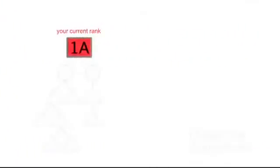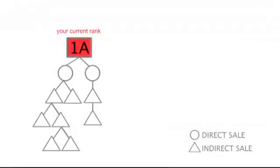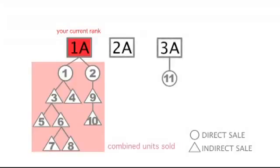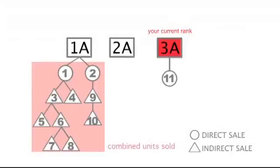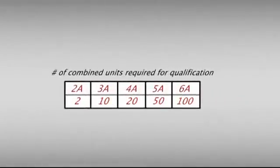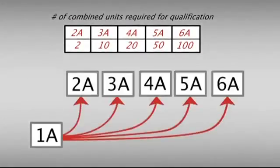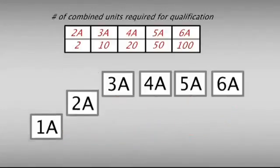Please note that if you, as 1A distributor, make two direct sales and had 8 indirect sales, it would mean you would have earned 10 combined units sold. When you make one more direct sale, you would then immediately skip levels and automatically become a level 3A distributor instead of going to 2A distributor. This happens because if you have reached the required number of combined units sold, you deserve to jump ahead to a higher rank where you belong.